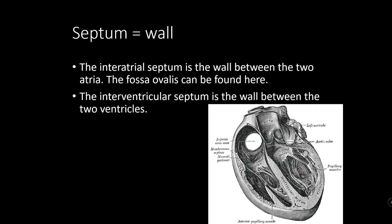Anytime you see the word 'septum,' remember that means wall. There's a wall between the two atria and a wall between the two ventricles. The wall between the atria is called the interatrial septum. In a fetus, that wall has a hole in it called the foramen ovale — a bypass that allows blood to skip the lungs since a fetus is not using them. As you develop, that hole closes and leaves a thin weak spot called the fossa ovalis, which you can still see in adults. The wall between the two ventricles is called the interventricular septum.